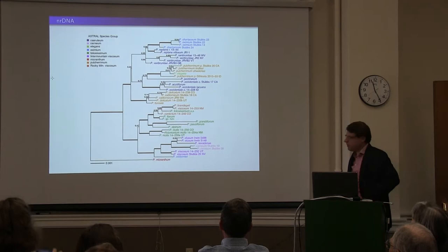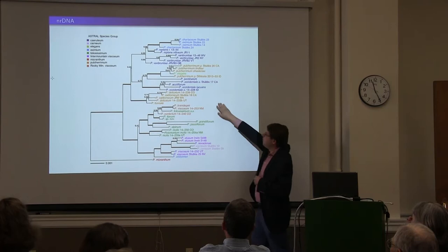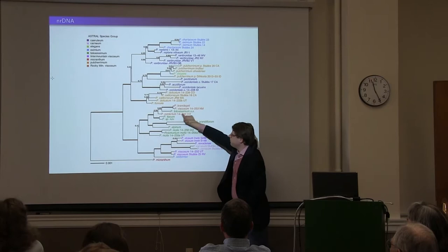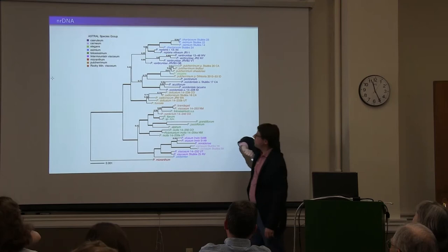In terms of the more commonly used markers in systematics — this is the nuclear ribosomal DNA — we are more or less recovering similar clades. But the orange here is embedded in places where it shouldn't be, though not well supported. The blue is showing up in multiple places, but not well supported, and orange is showing up in multiple places but not well supported either.